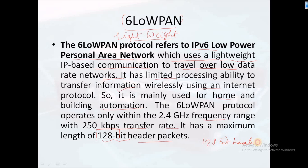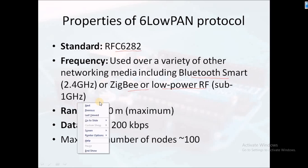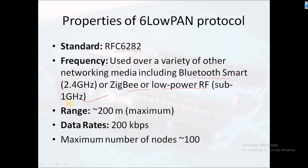The 6LoWPAN standard follows RFC 6282 and can operate over a variety of network media including Bluetooth Smart and Zigbee. At low power RF, it uses a 1 GHz frequency range with approximately 200 Kbps maximum data rate and supports a maximum of approximately 100 nodes.